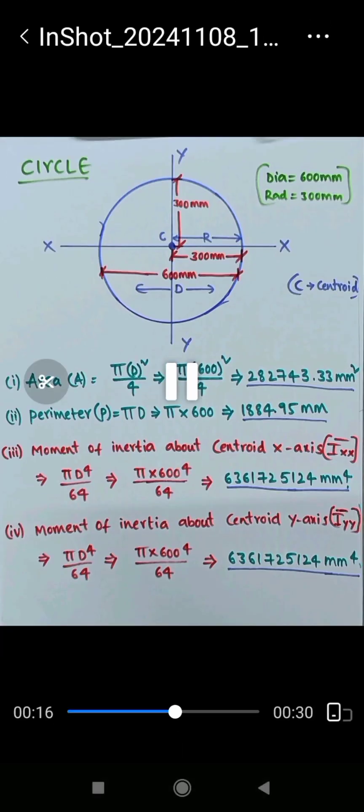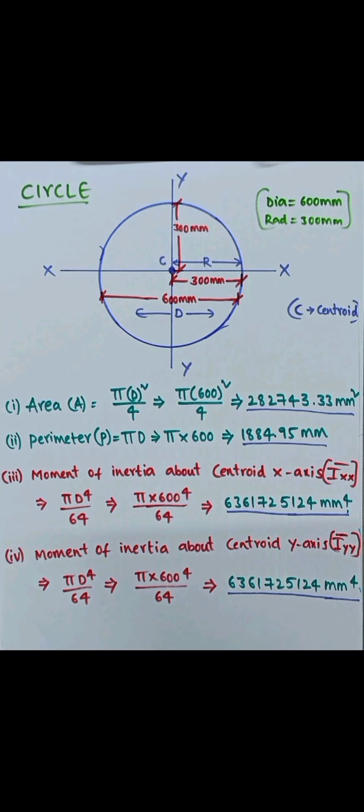Here you see, this is circular section, where we can see area, perimeter, πd⁴/64, that is moment of inertia, about both centroidal axis, x and y axis.